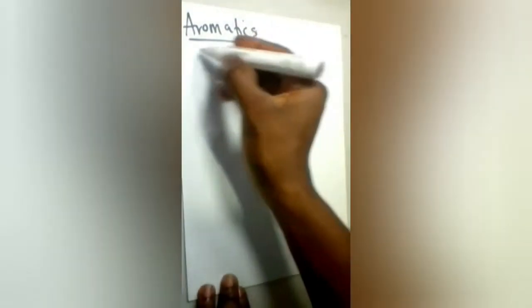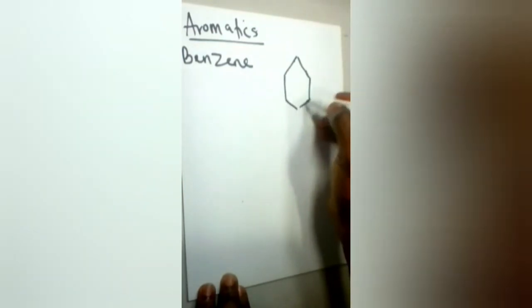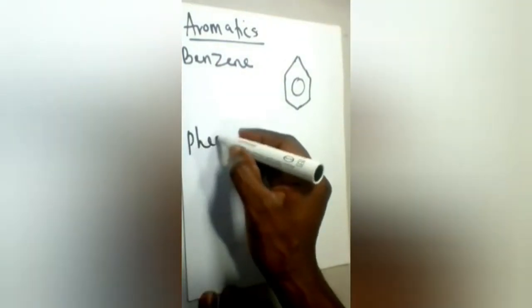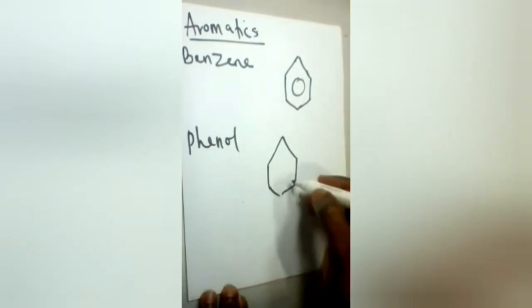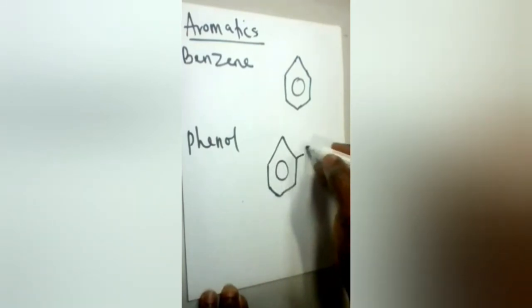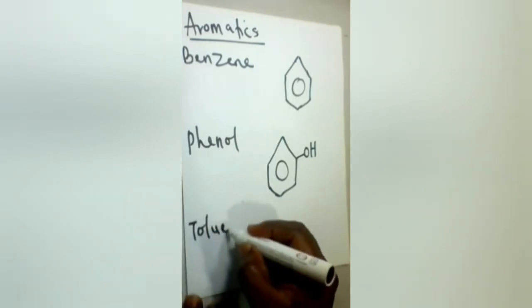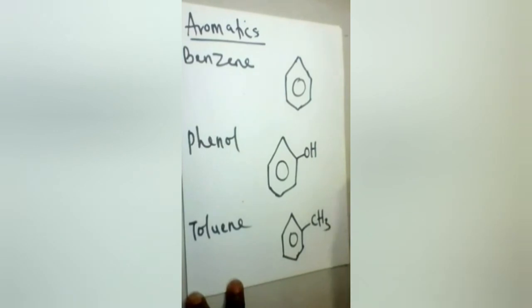Cyclobutane. Examples of aromatics are benzene. This is the structure of a benzene. Other examples of aromatics include phenol, which is a benzene-type compound. Let's take our last example, sodium. All these compounds are benzene derivatives.